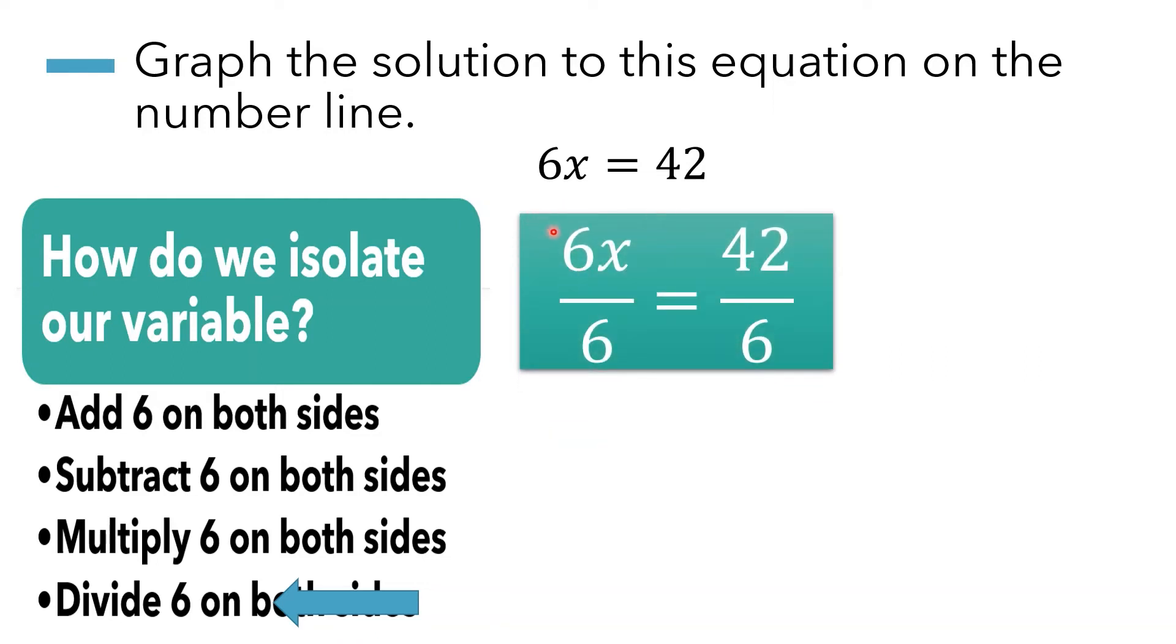Now, at this stage here, this is where we cancel out. And then we would have x isolated by itself. And we would simply divide 42 by 6. Now let's see what we get.